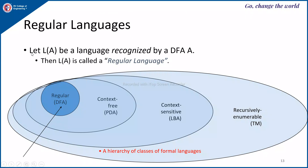Let L of A be the language recognized by DFA A — then L of A is called a regular language. The language accepted by a DFA is a regular language. This is the innermost language in the hierarchy. The next outer level is context-free language, recognized by pushdown automata (PDA). Outside that is context-sensitive language, recognized by linear bounded automata (LBA). The outermost is recursively enumerable language, recognized by the Turing machine.